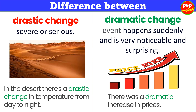Difference between drastic change and dramatic change. Drastic change means severe or serious. Example: In the desert there's a drastic change in temperature from day to night. Dramatic change means an event happens suddenly and is very noticeable and surprising. Example: There was a dramatic increase in prices.